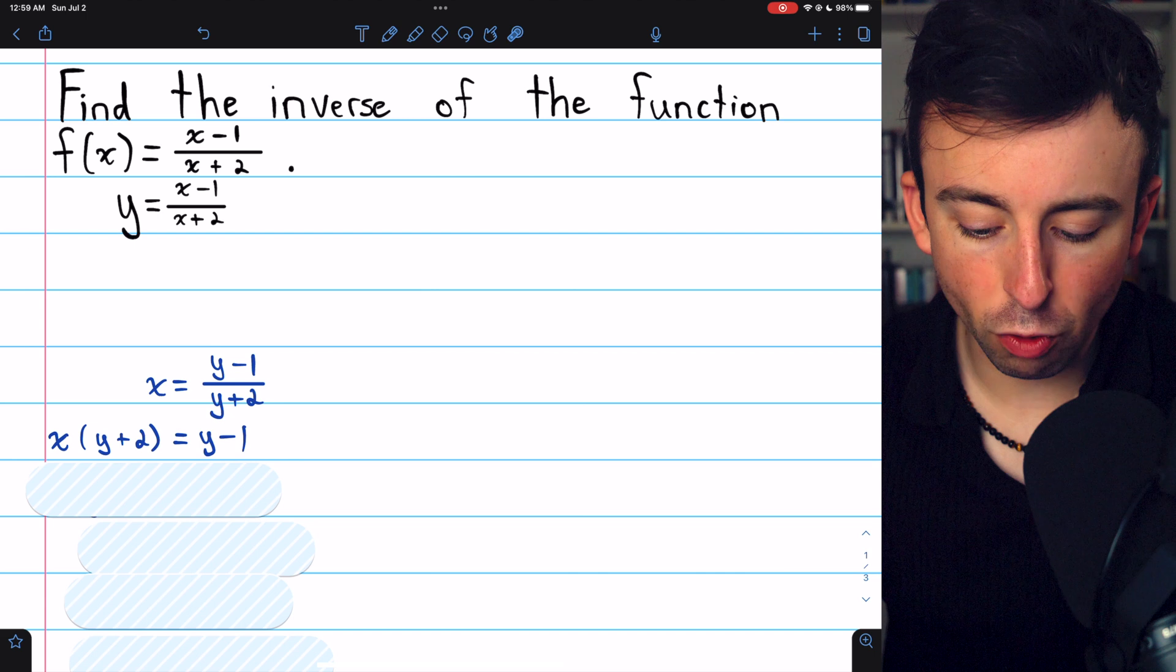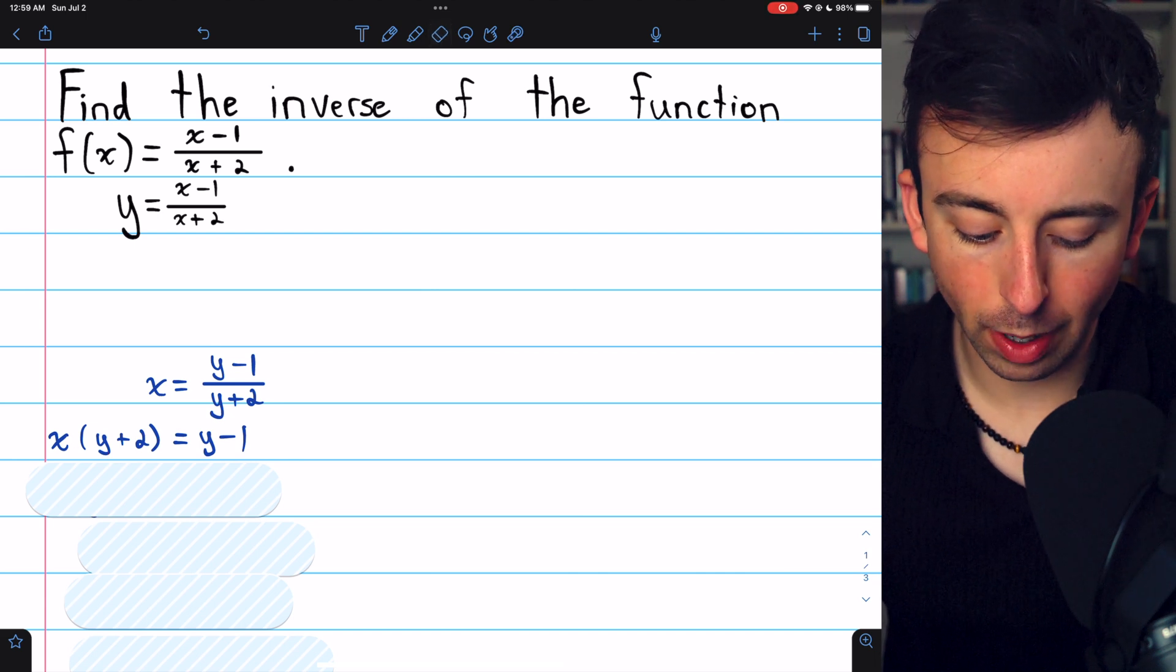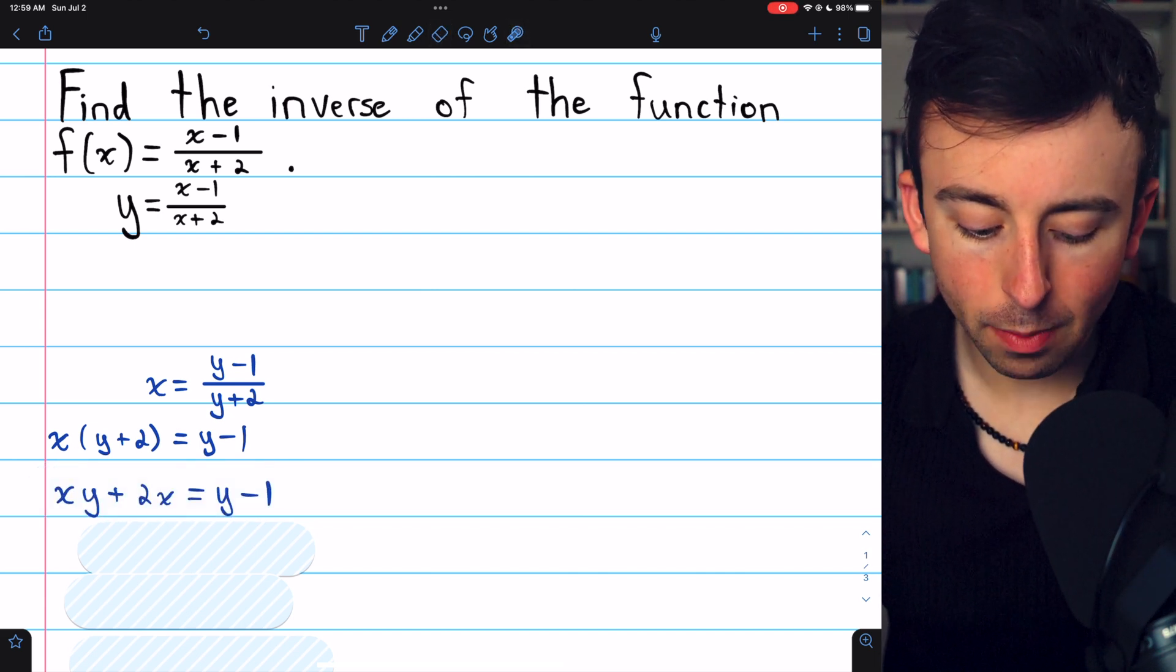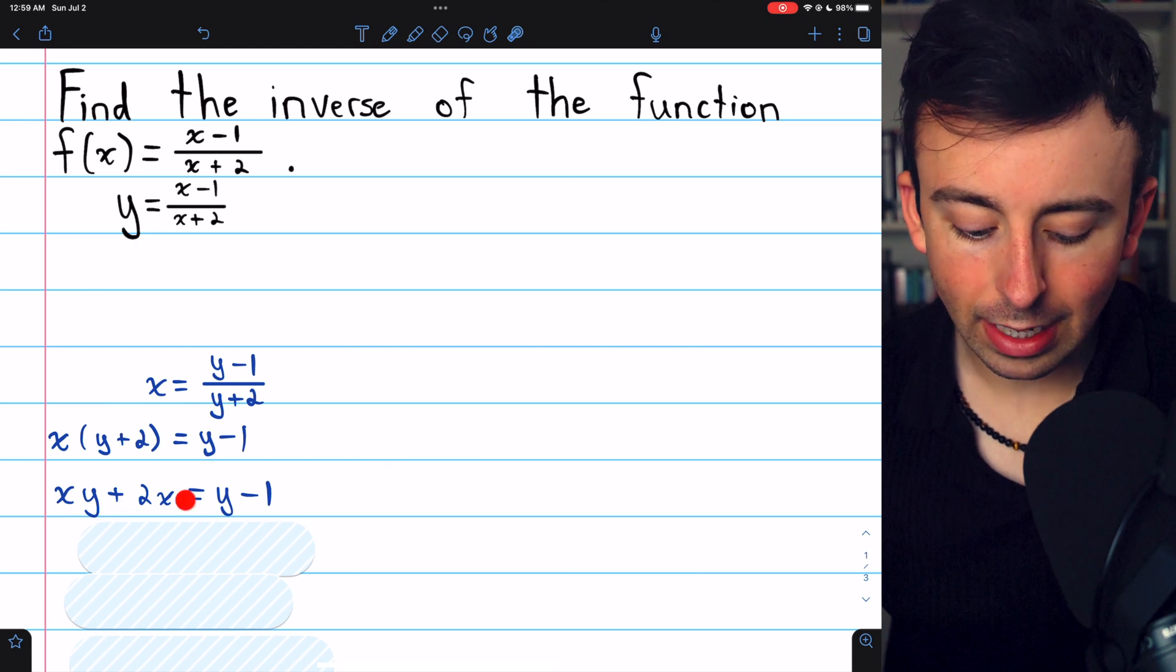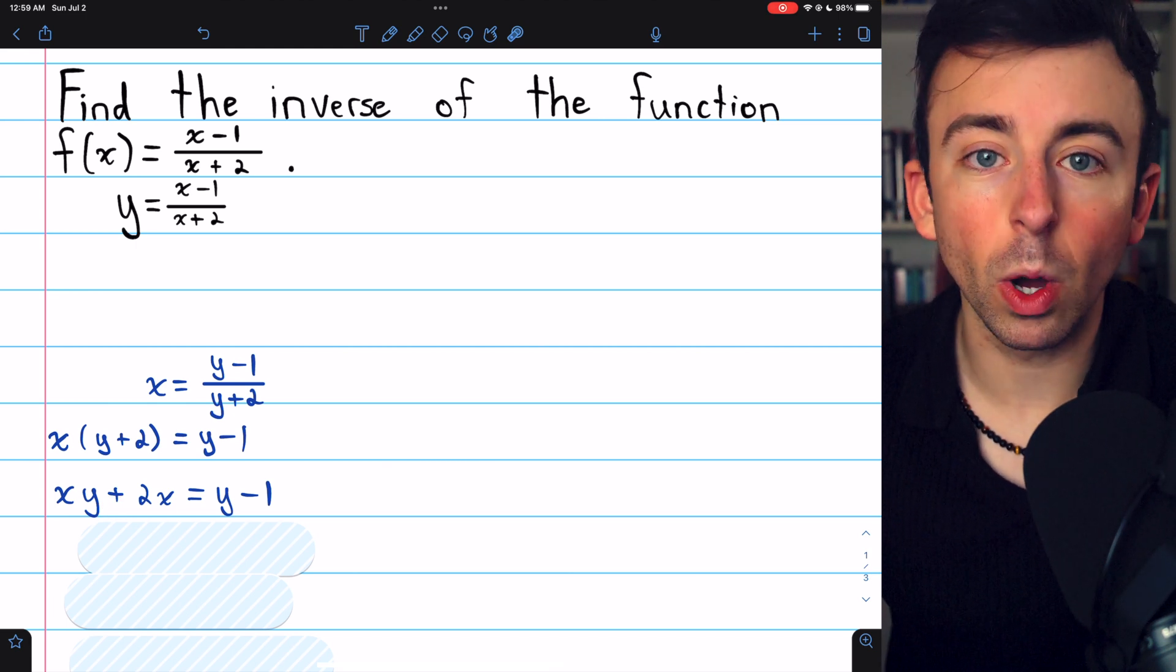Now we can distribute the x through those parentheses. And that gives us xy plus 2x equals y minus 1.